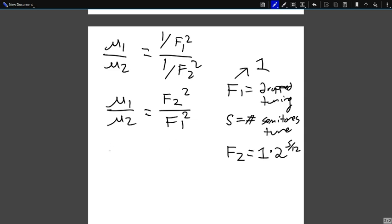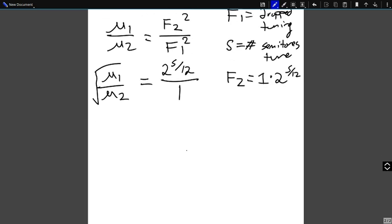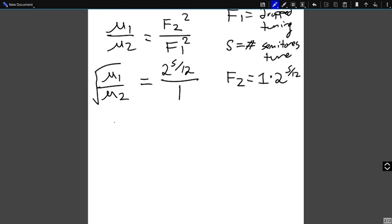So we can simplify this now and say mu1 over mu2. Let's go ahead and take the square root of this entire term, so we can just ignore the square terms on both of these. F2 equals F2, which is 2 raised to the S over 12, over 1. So this is quite easy.